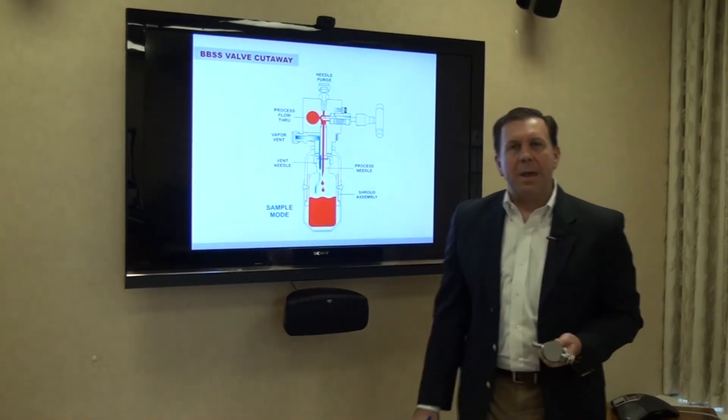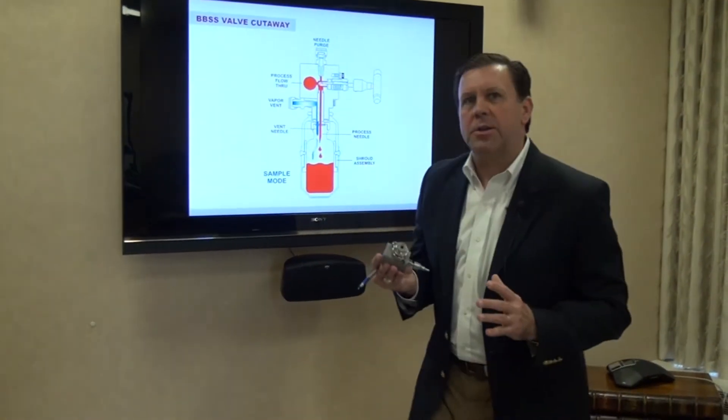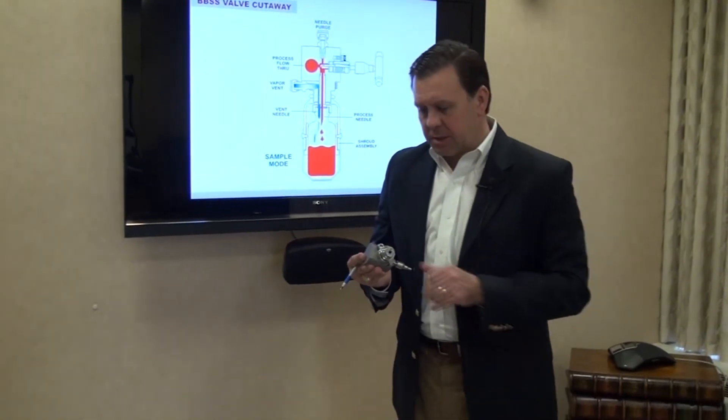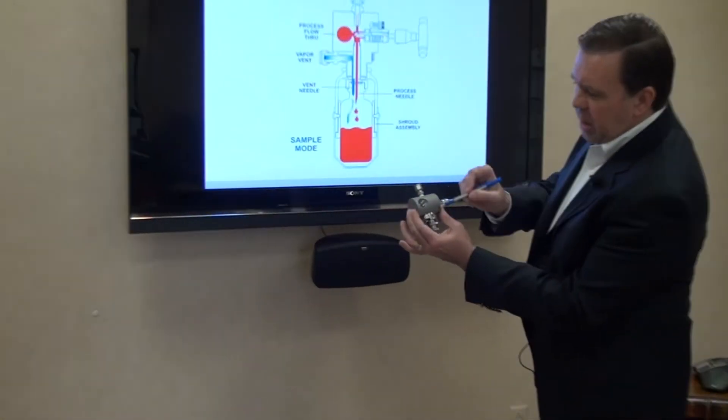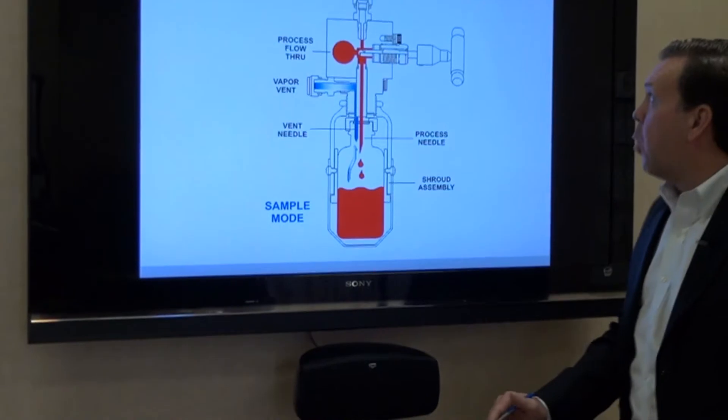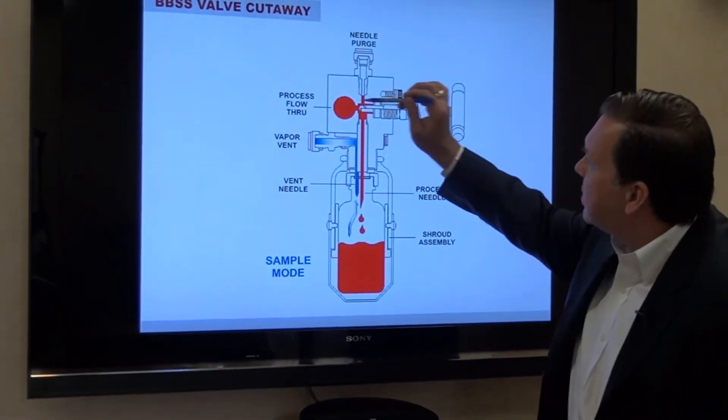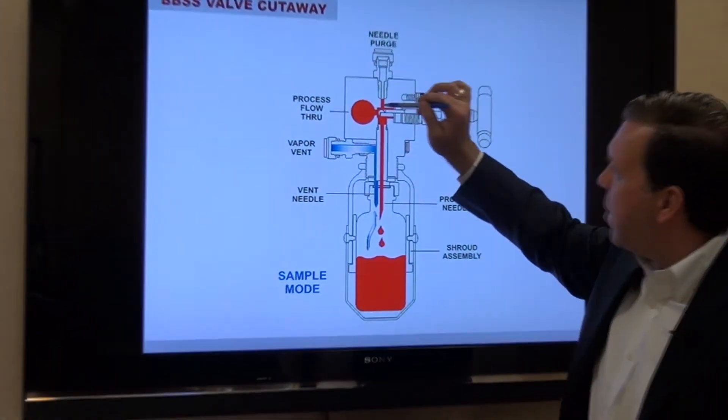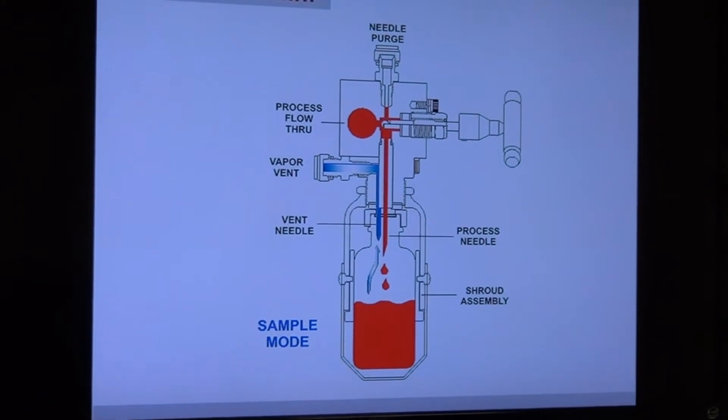Okay, so let's take a look at the sample valve itself. This is really the heart of the basic bottle sampling system. This is the valve assembly, this is the needle injector assembly, and I have here a cutaway of how that valve works. So remember, we're continuously flowing through the half-inch port through the main body port of the valve.